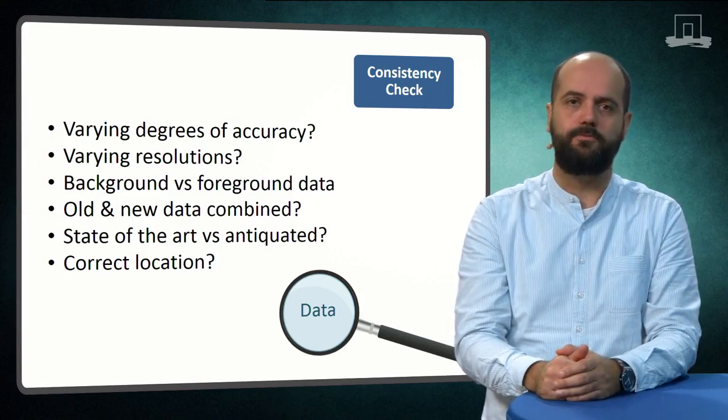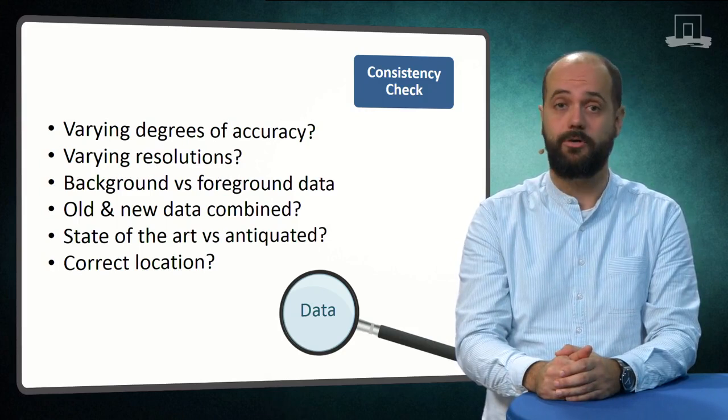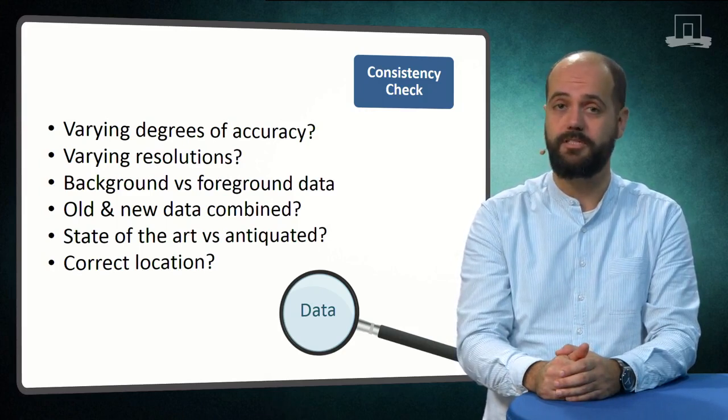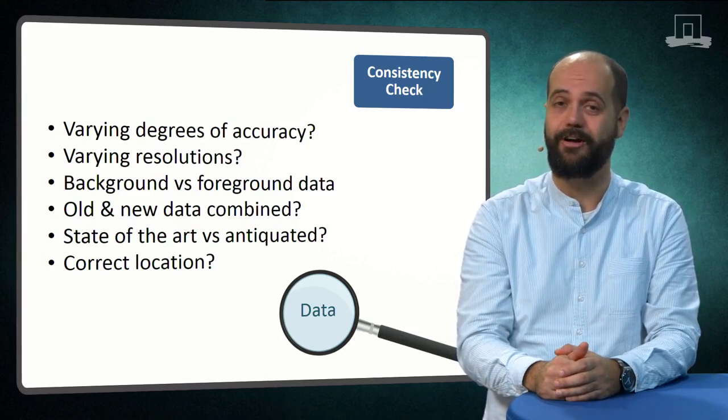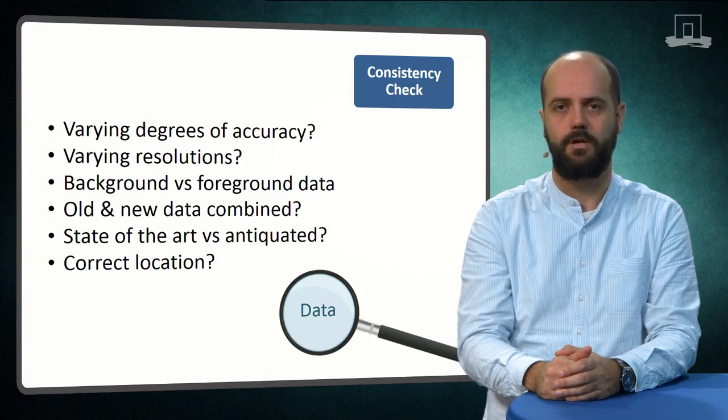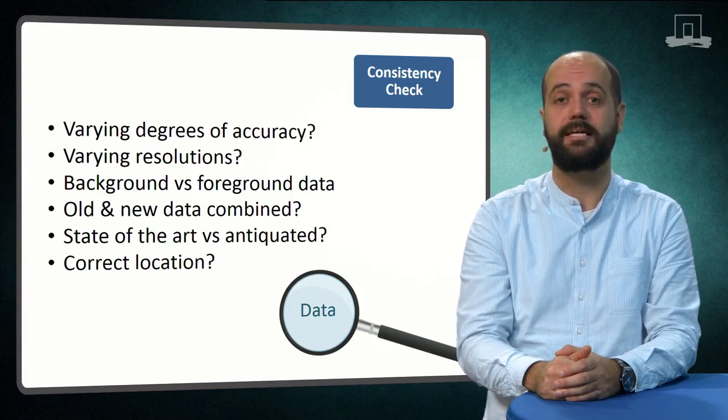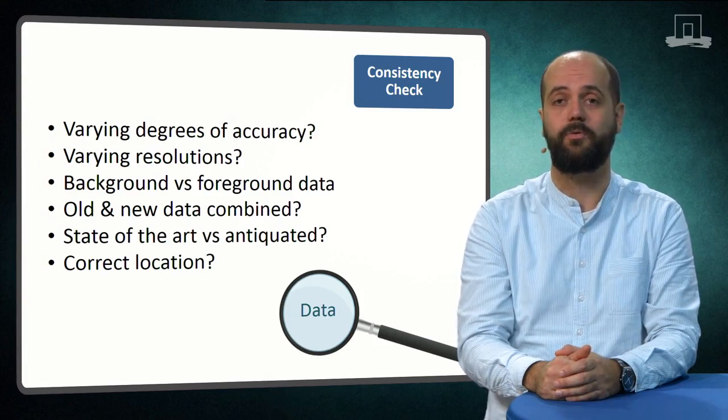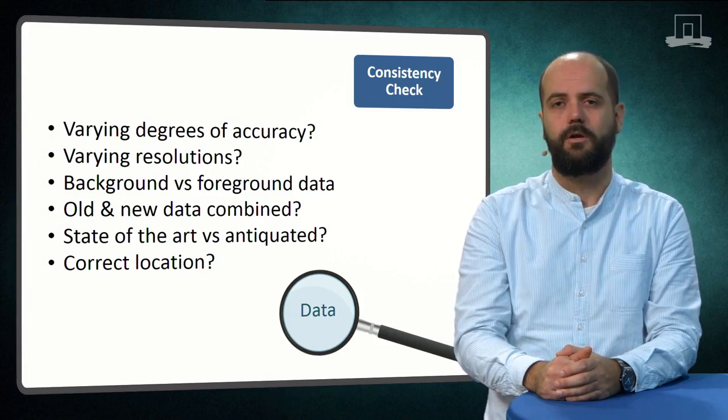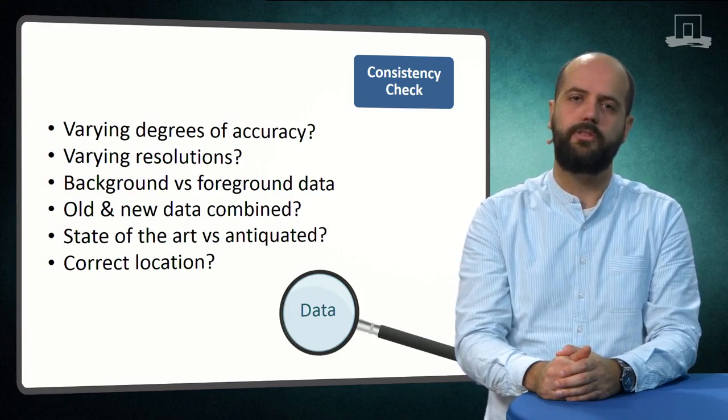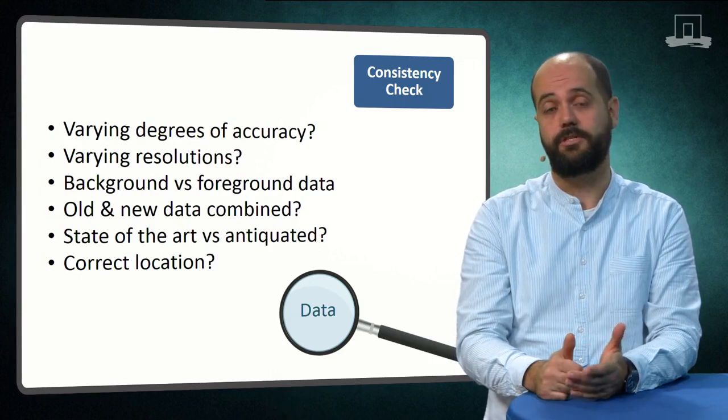It might not be possible for our LCA to be completely consistent. Where inconsistencies are unavoidable, we need to explain why this is. We must make these inconsistencies explicit when presenting our results. We should also be able to explain how the inconsistencies have influenced our final result.